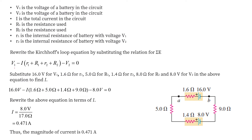Substituting the values: V1 equals 16V, r1 equals 1.6 ohms, R1 equals 5 ohms, r2 equals 1.4 ohms, R2 equals 9 ohms, and V2 equals 8 volts. From here we can find the value of current i flowing through the circuit, which comes out to be 0.471 ampere.